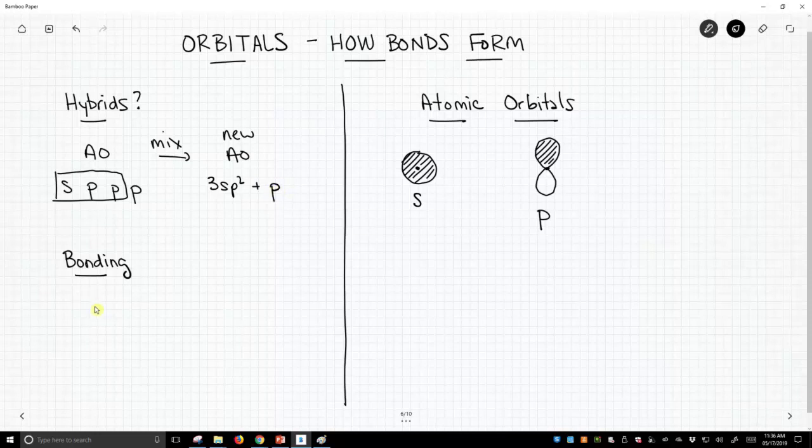Bonding orbitals are different because we're going to take atomic orbitals, and again, we're going to mix them, and now we're going to make new MO's, molecular orbitals. So we're going to use up our atomic orbitals to make molecular orbitals, orbitals that are shared across multiple atoms, not just atomic orbitals. So let's talk a little bit more about our atomic orbitals.